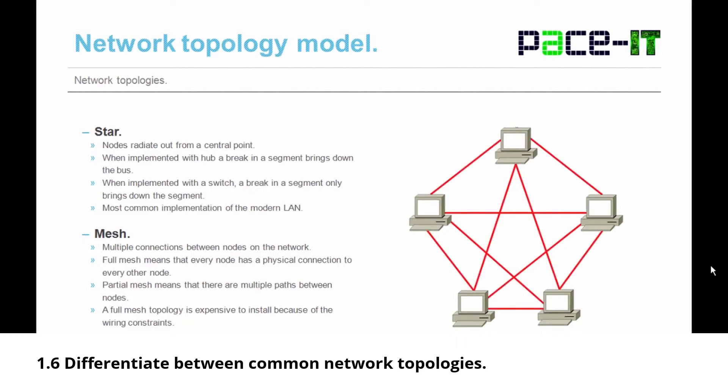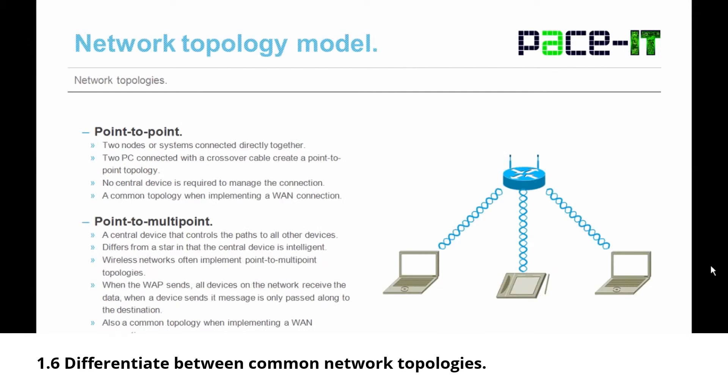Then there's the mesh. A true mesh topology — a full mesh — is when all nodes are connected to all other nodes. Full meshes aren't very common because they are expensive and difficult to maintain. It's more common to find partial meshes, where there are multiple paths between nodes. Everyone knows at least one partial mesh network — the internet.